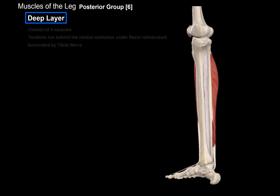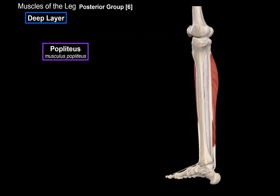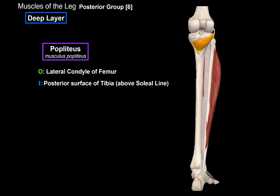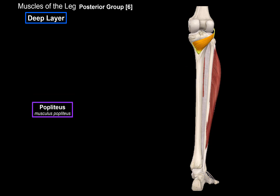The first one is the popliteus muscle. It originates from the lateral condyle of the femur and inserts at the posterior surface of the tibia, above the soleal line. When it contracts, it causes flexion and internal rotation of the leg.